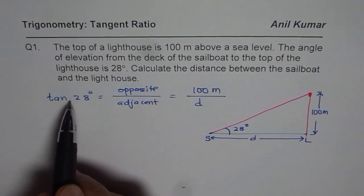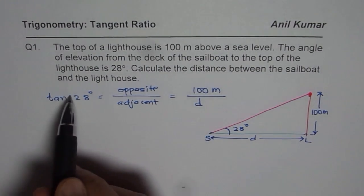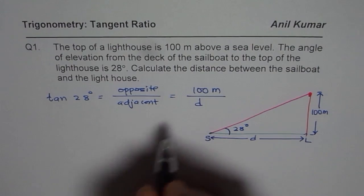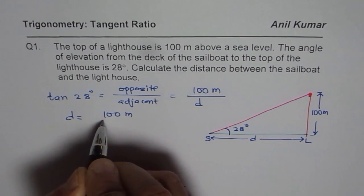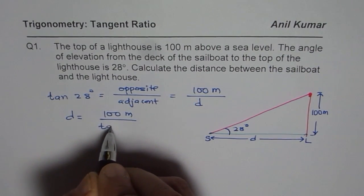Now in that case, these are the ratios. We can always cross multiply and get our answer. So we get D as equal to 100 meters divided by tan of 28 degrees.